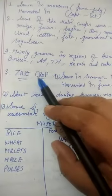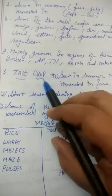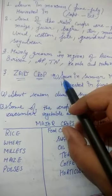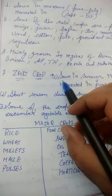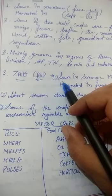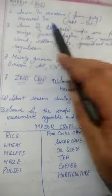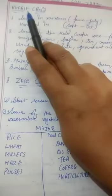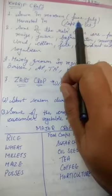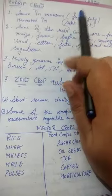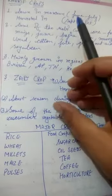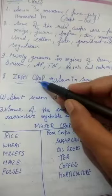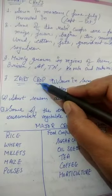Zaid crops — when Rabi crops are harvested in April and Kharif crops are sown in June, the short time period between April and June when crops are grown are called Zaid crops.